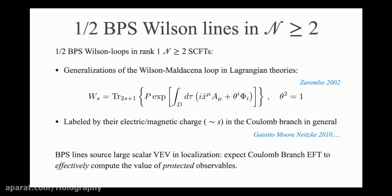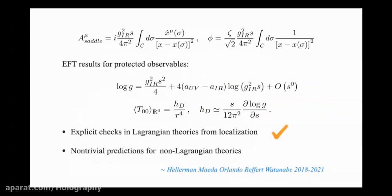In this effective field theory we computed the partition function of a circular defect — an interesting observable because of the G-theorem — and found that it grows exponentially with s with interesting corrections depending on anomaly coefficients of the UV theory and the Coulomb branch. We also computed the one-point function of the stress tensor as a 1/s expansion, where s is the size of the representation. These results were explicitly validated in Lagrangian theories from localization, and make non-trivial predictions for non-Lagrangian theories. This is very similar to former results by Hellerman, Mahmoud, Orlando, Reffert, and Watanabe in the large-charge expansion in superconformal field theories.